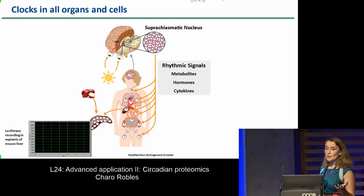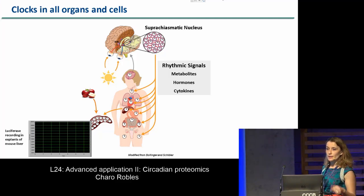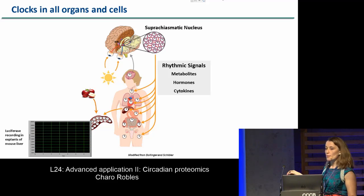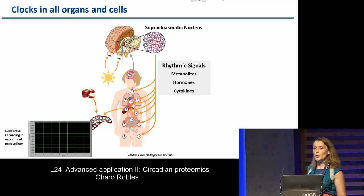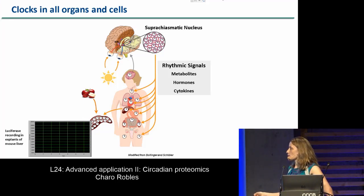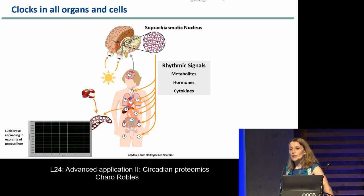This nucleus, called the master clock, sends rhythmic signals — metabolized hormones, cytokines — through different innervation and also hormonal systems to peripheral clocks. Every organ has a clock. These rhythmic signals coordinate every organ so that they are in synchrony with the rest of the body. There are other environmental cues important for synchronizing these internal clocks. For metabolic tissues like the liver, pancreas, stomach, and intestine, food intake is one of the key environmental cues for synchronizing the clocks.